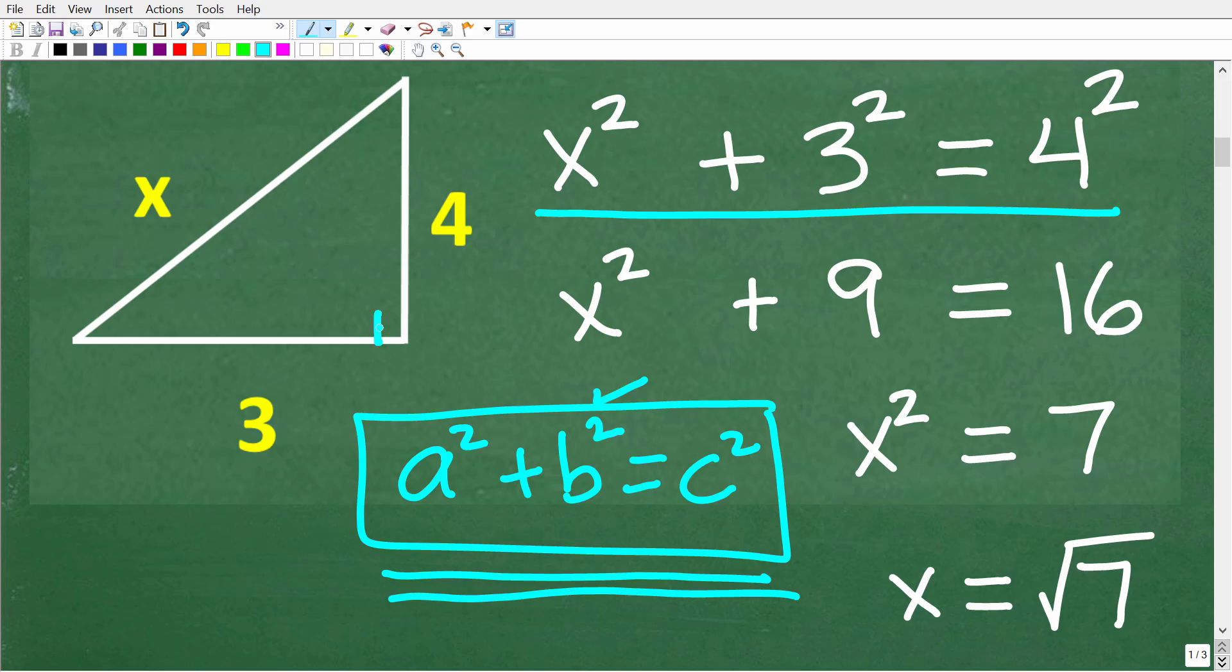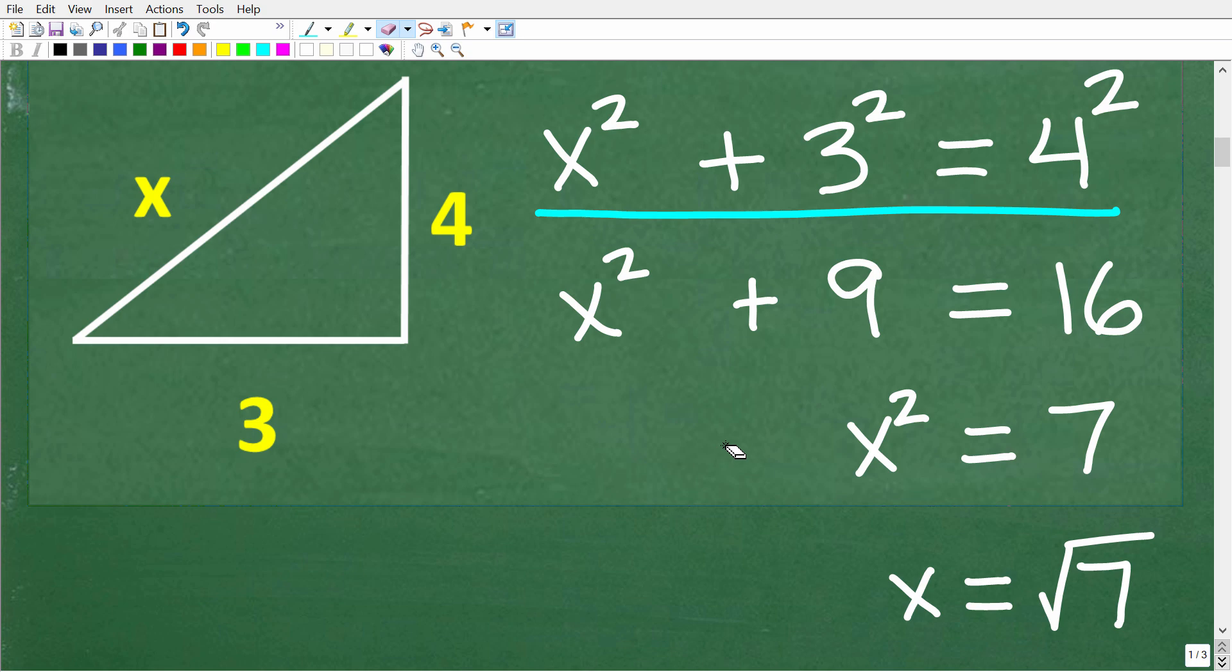Now, if this was a right triangle, we would need this little notation, this little box in the corner, or we would need some other way to know that this angle right here is 90 degrees. Okay, so that's error number one. But let's assume that this is a right triangle.